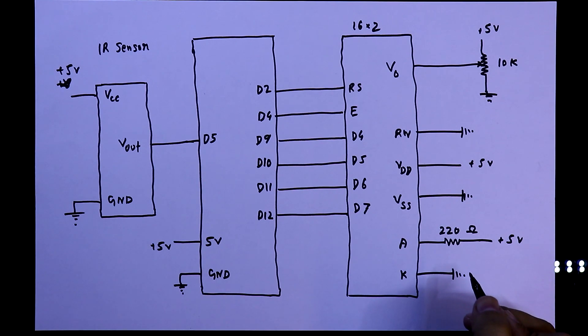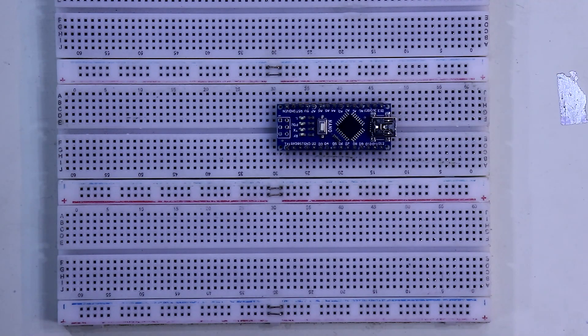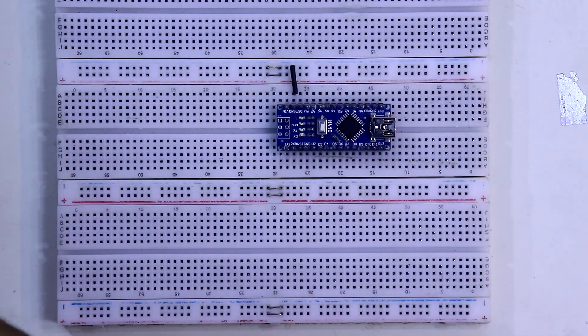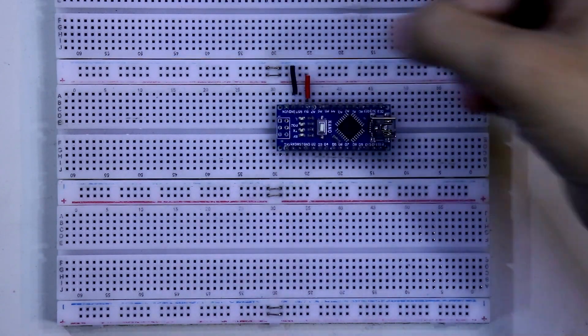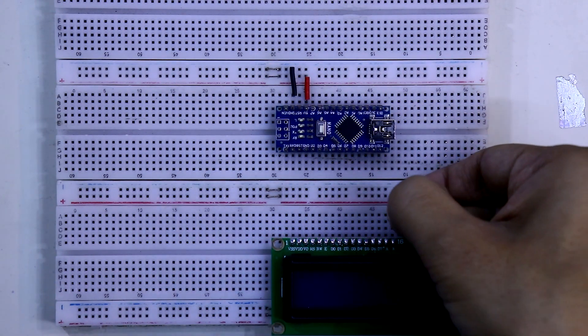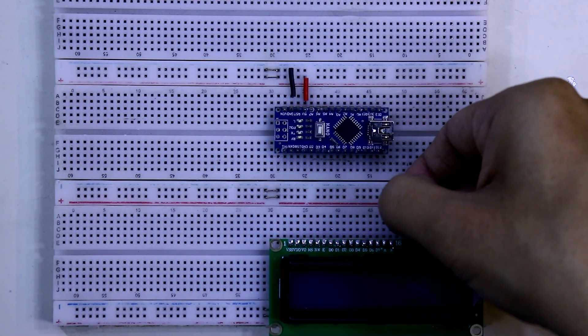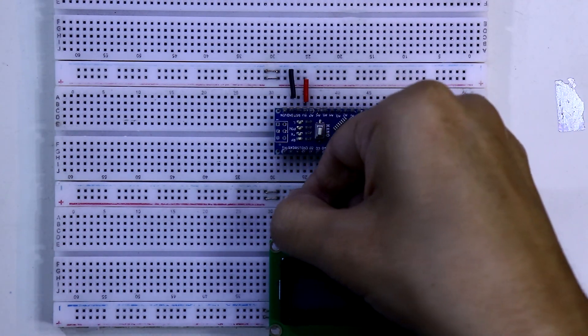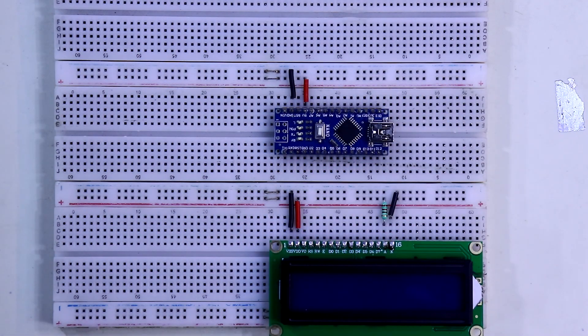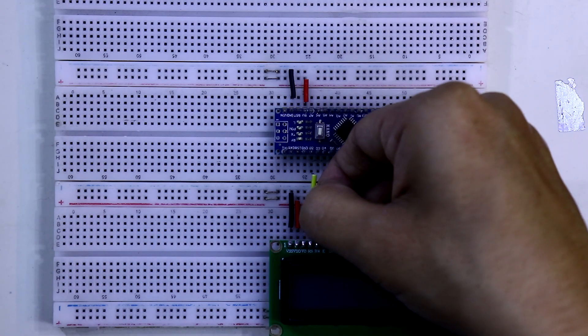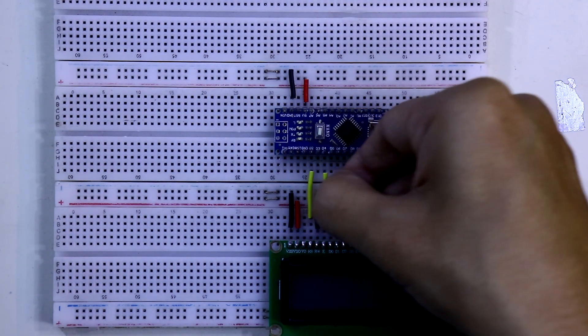So this is all about the simple connection. Here is Arduino Nano. The ground pin of the Arduino is connected to ground, 5V pin is connected to the positive rail. Here is the display. Cathode pin of the LED is connected to ground. Anode is connected to the positive rail through 220Ω resistor. VSS to the negative rail, VDD to the positive rail, RW to the negative rail. RS pin to D2 of Arduino, Enable pin to D4.